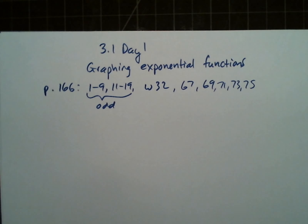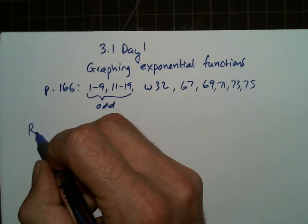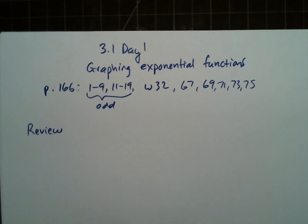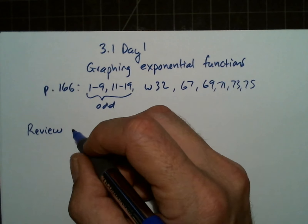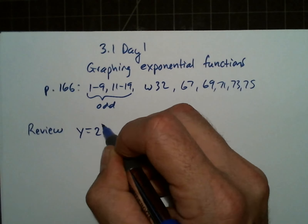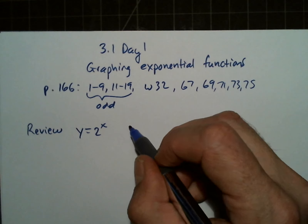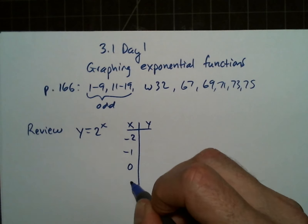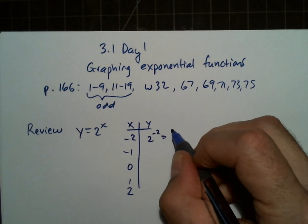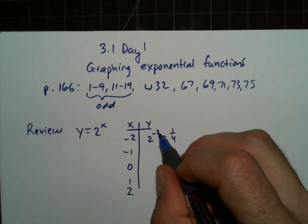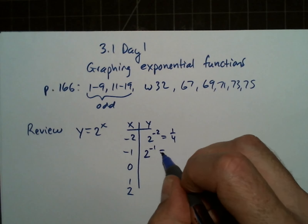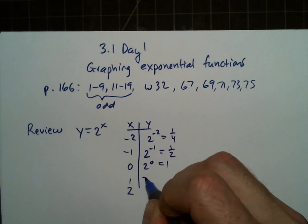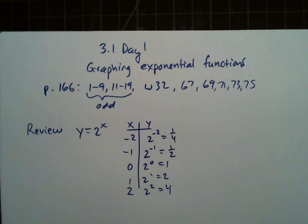In this lesson we'll graph exponential functions. Let's remember what's happening when we evaluate with negative exponents. The negative makes the reciprocal and then we square it — we get one-fourth. Here we would have one-half. Two to the zero is one. Now we'll look at some functions using these properties.